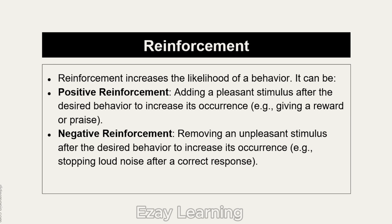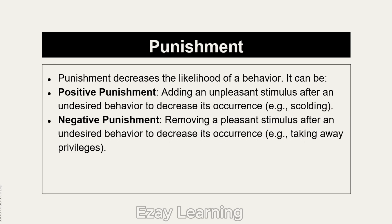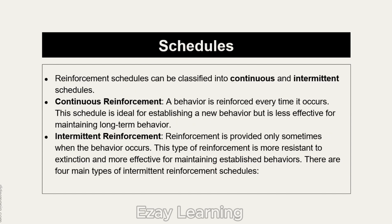Negative reinforcement involves removing an unpleasant stimulus to increase the desired behavior — for example, stopping a loud noise after a correct response. Punishment is used to decrease the likelihood of a behavior. Positive punishment adds an unpleasant stimulus, while negative punishment removes a pleasant stimulus — for example, removing privileges to decrease undesired behavior.